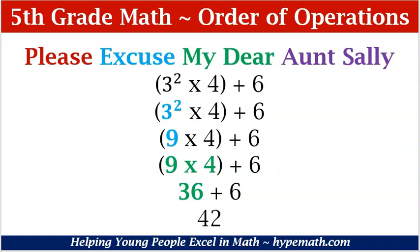Let's look at some examples. We have in parentheses 3 squared times 4 plus 6. We see that we have parentheses, but before we calculate what's inside the parentheses, we must first find the value of 3 squared. 3 times 3, which is 3 squared, is equal to 9. So now in my parentheses I have 9 times 4 plus 6. We calculate 9 times 4, which is 36, and then add 6. That is equal to 42.